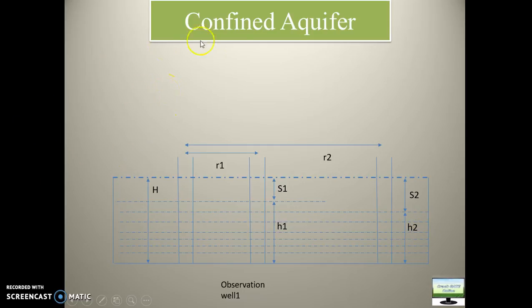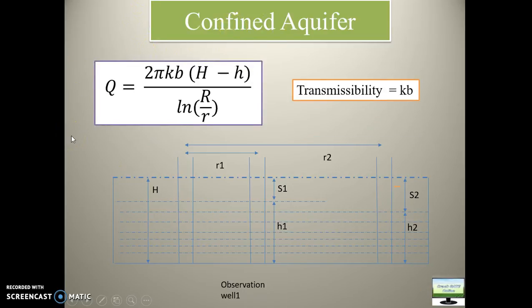So now you need to remember the formula for discharge of confined aquifers. Which is Q = 2πKb(H-h) / ln(R/r). See, here K is the hydraulic conductivity and b is the width of the aquifer. In this H is the total saturated length of the aquifer. The total saturated length. And this h is the height of water in the pumping well.